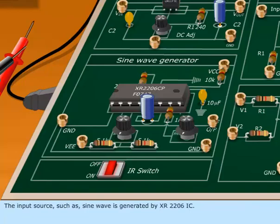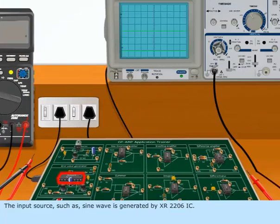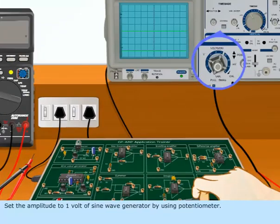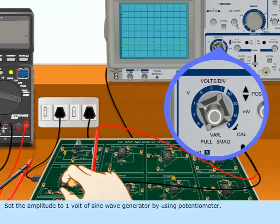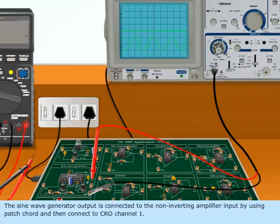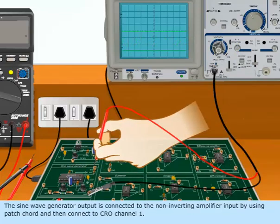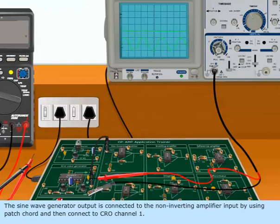The input source, such as sine wave, is generated by XR2206 IC. Set the amplitude to 1 volt of the sine wave generator using the potentiometer. The sine wave generator output is connected to the Non-Inverting Amplifier input by using a patch cord, and then connected to CRO channel 1.